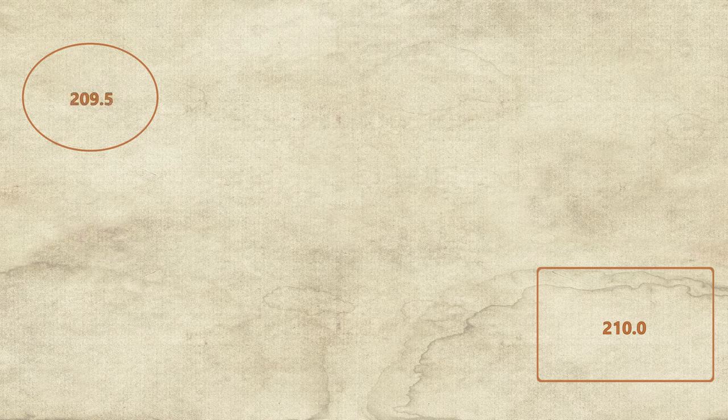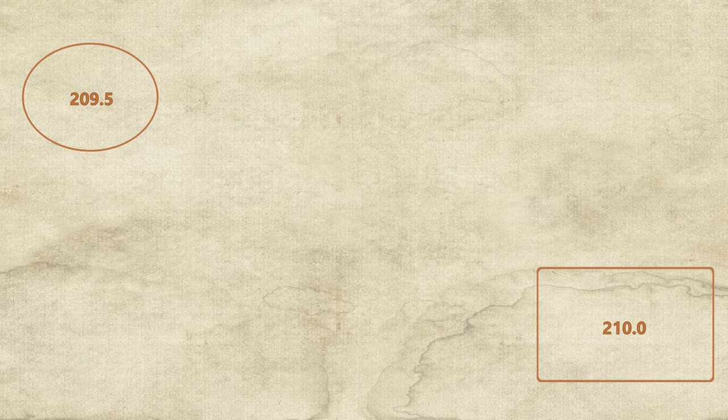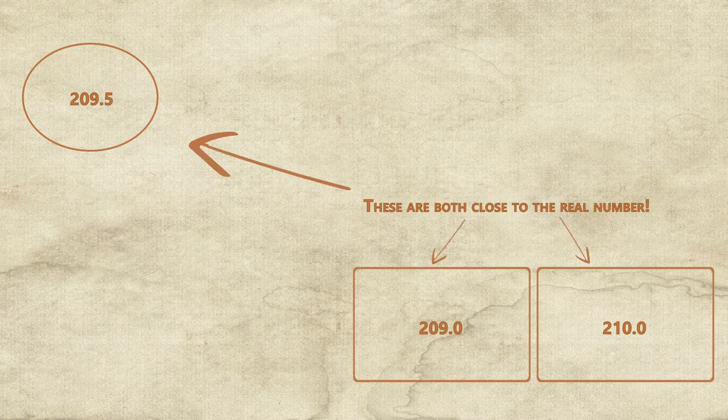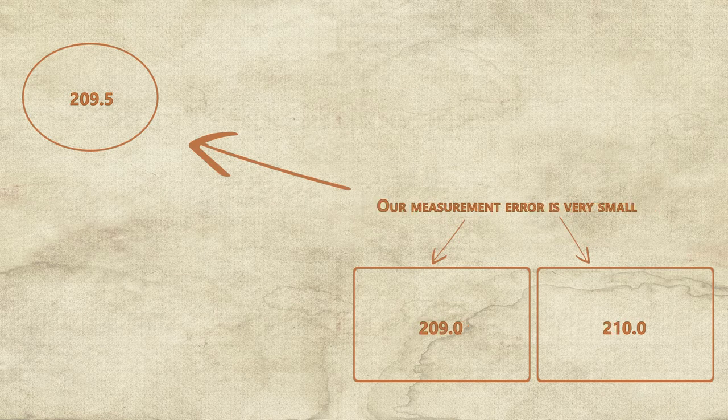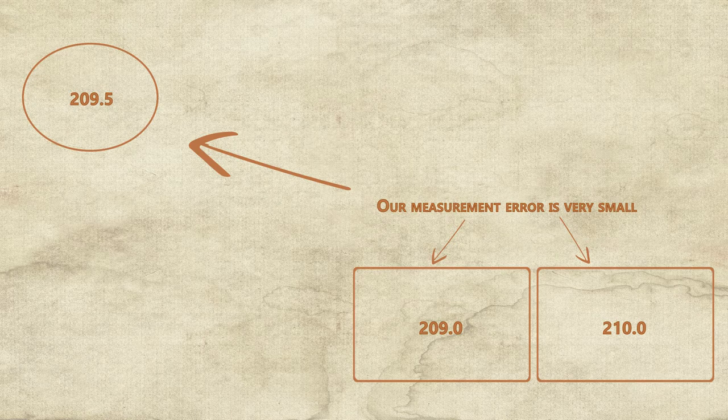When you stepped on scale one, it might have said 210. You stepped on scale two, and it said 209. That's only a difference of about a pound. You didn't step on scale one and it said four, then step on scale two and it said 6,000. They're close. The amount of disagreement is small, and the amount of error is also probably small.